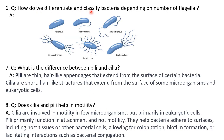How do we differentiate and classify bacteria depending on the number of flagella? Atrichous has no flagella. Monotrichous has a single flagellum at one end. Amphitrichous has a single flagellum on both ends of the cell. Cephalotrichous means a cluster of flagella on both ends. Peritrichous means flagella present all over the bacterial cell surface. Lophotrichous is a cluster of flagella present at only one end.